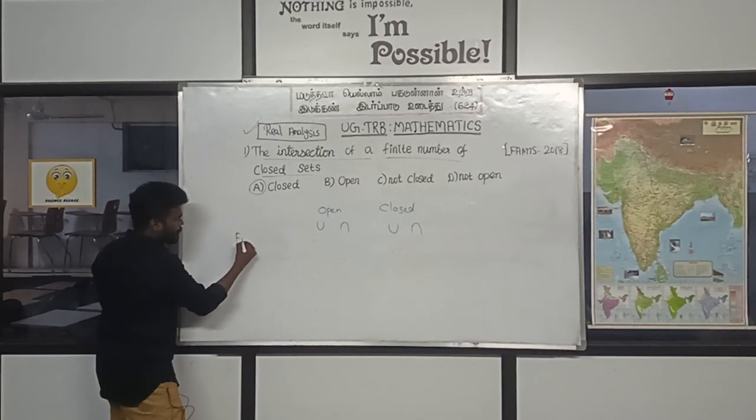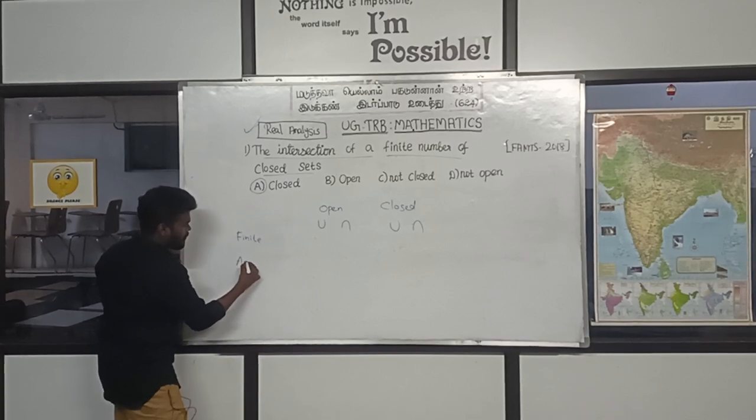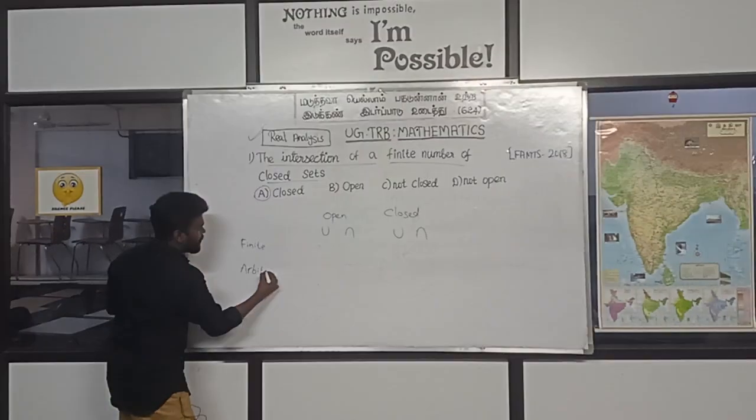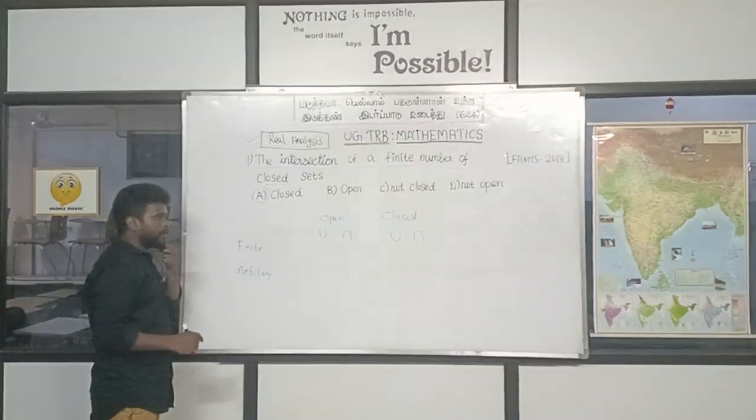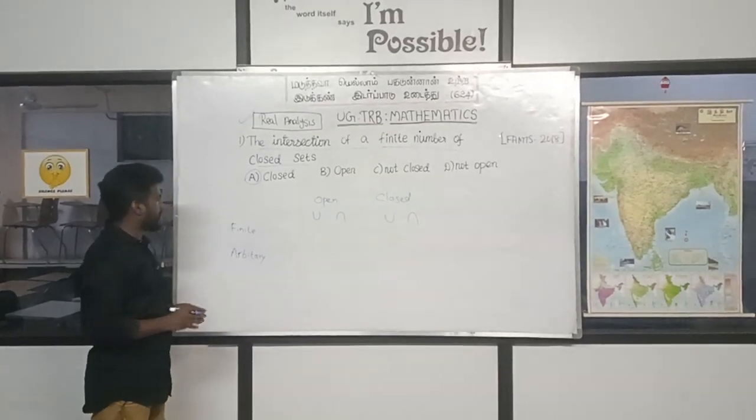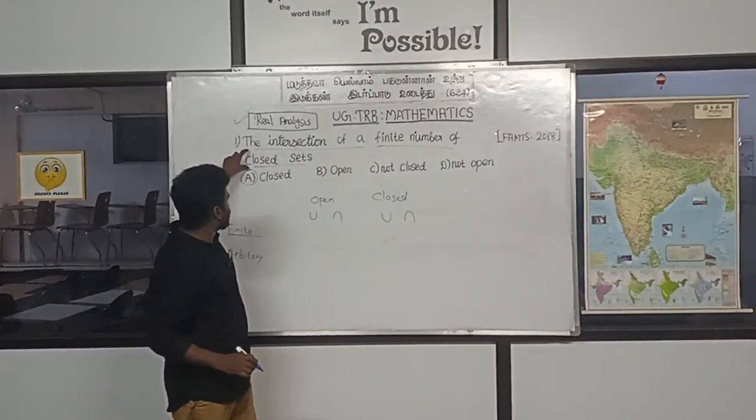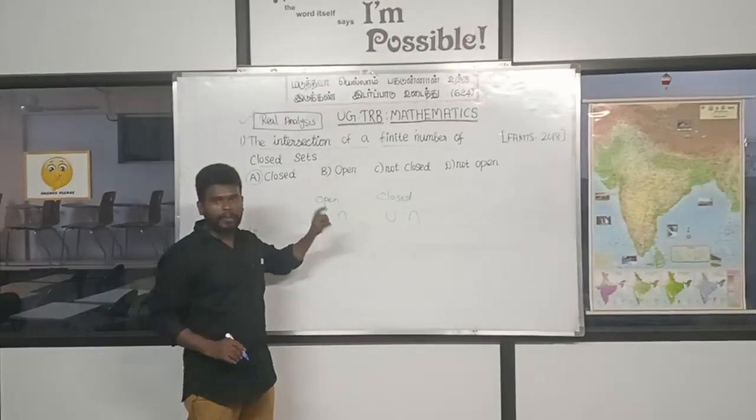The intersection is a finite number and arbitrary. Now, if you don't know the answer, in the flow, the answer is that the finite number is closed set.